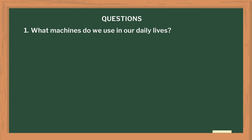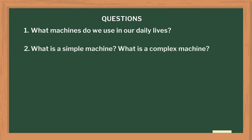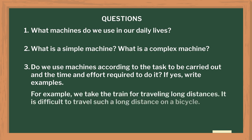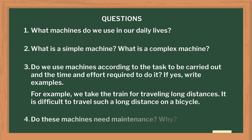Some more machines were discussed and classified in class. As home assignments, the following questions can be asked: What are the machines required in our daily life? What is a simple machine? What is a complex machine? Do we use machines according to the task, the time, and the effort required — if yes, write examples. For example, we take a train for traveling very long distances; we cannot travel such a long distance on a bicycle. Do these machines need maintenance? Why? The details of each activity are given in the text lesson plan, the link for which is given in the description of this video.